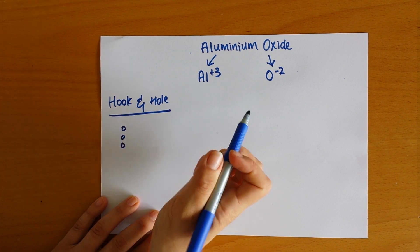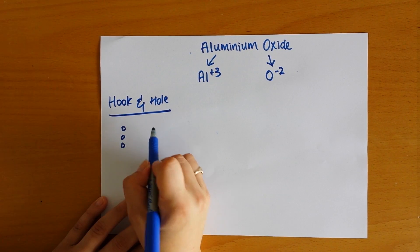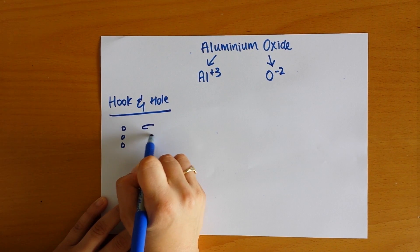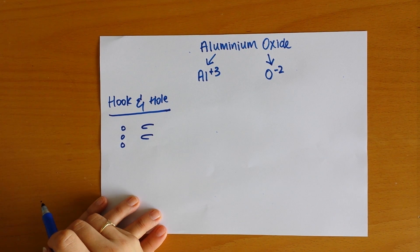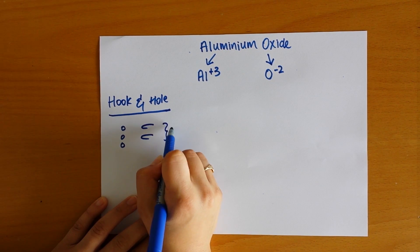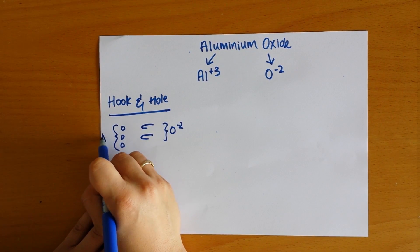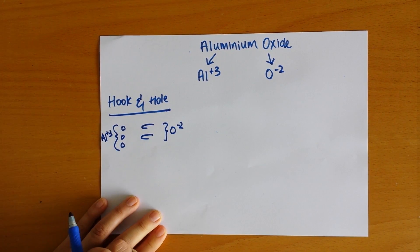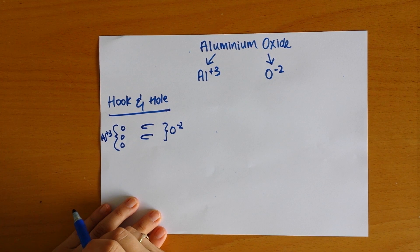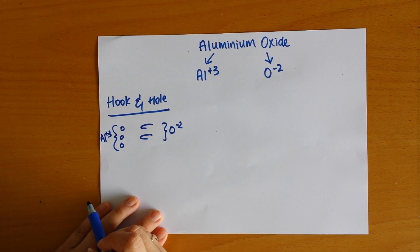And oxide, we're going to use as a hook, and we have one hook for every charge that we have. So in this case we have O2 minus and aluminum 3 plus. And for this method, every hook needs a hole and every hole needs a hook.